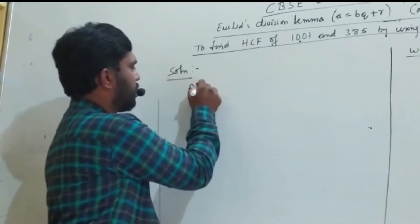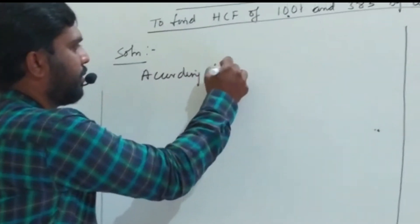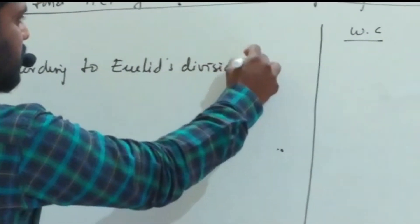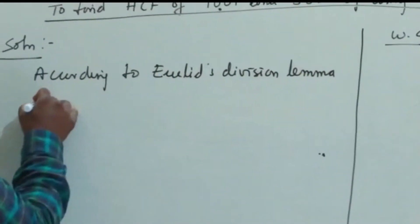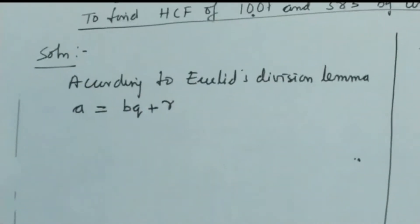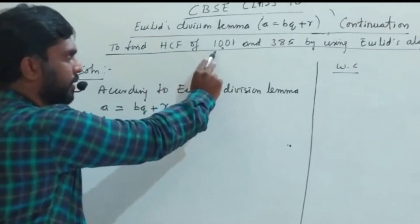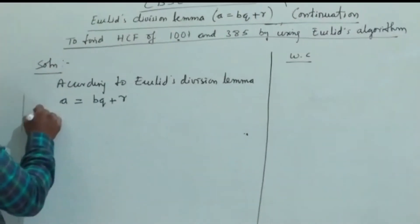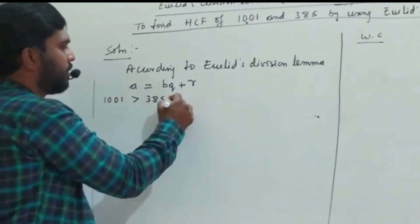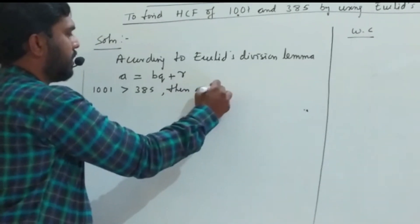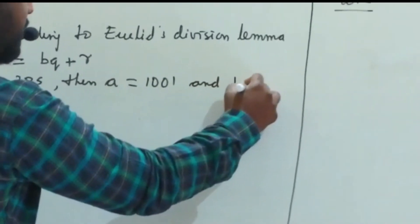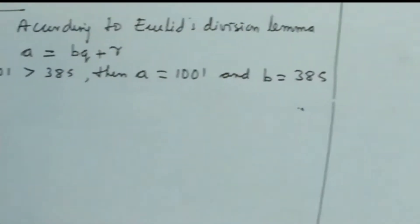We all know that according to Euclid's division lemma, A is equal to BQ plus R. If you look at the numbers 1001 and 385, since 1001 is greater than 385, then A is equal to 1001 and B is equal to 385.